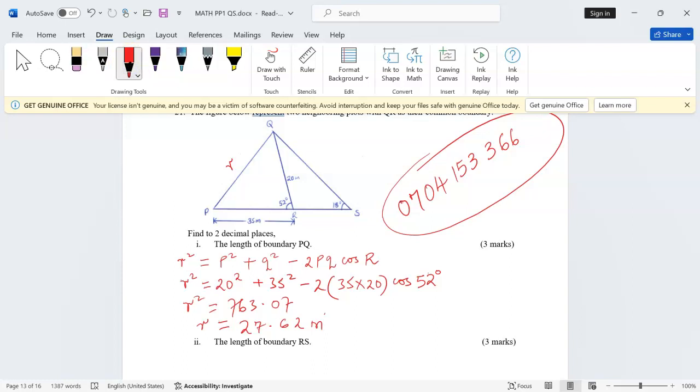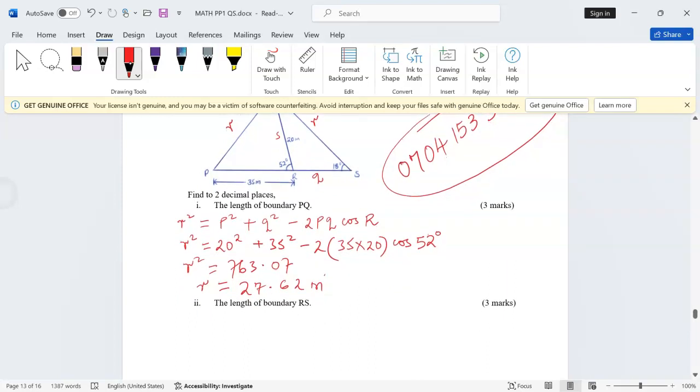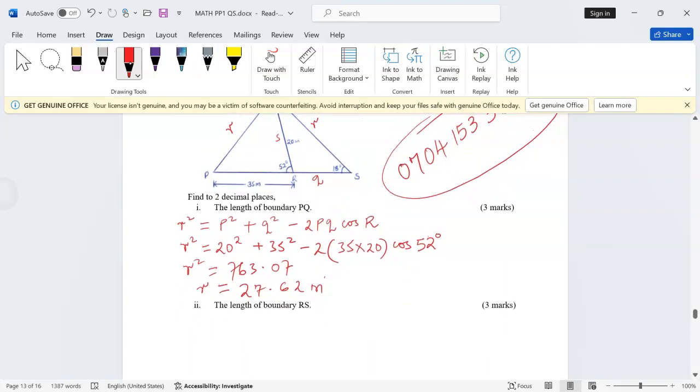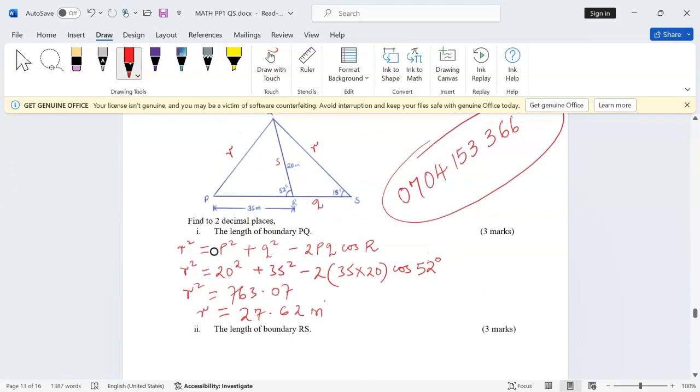In this triangle, the length opposite to Q will be called q, the length opposite to S will be called s. So now we call this length s because we are referring to a very different triangle. The length RS is the one which is unknown.